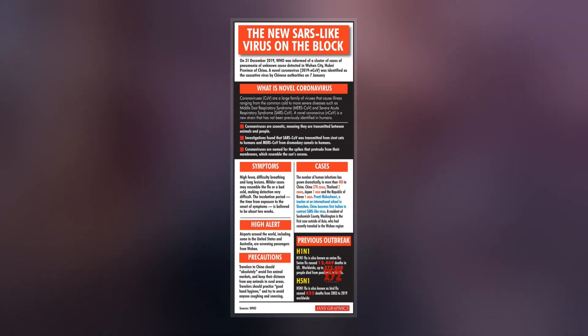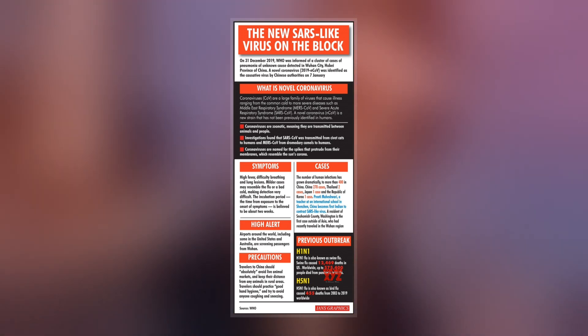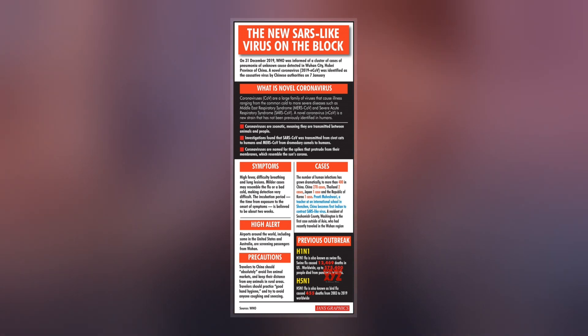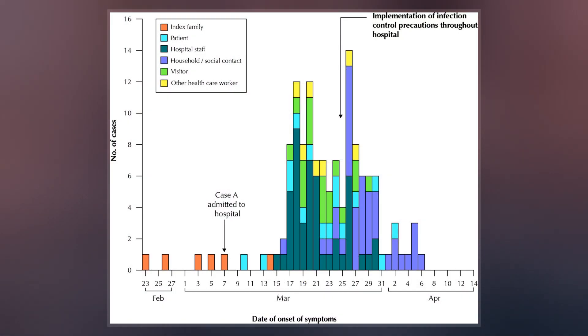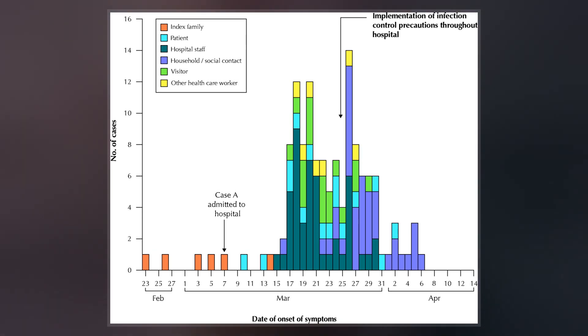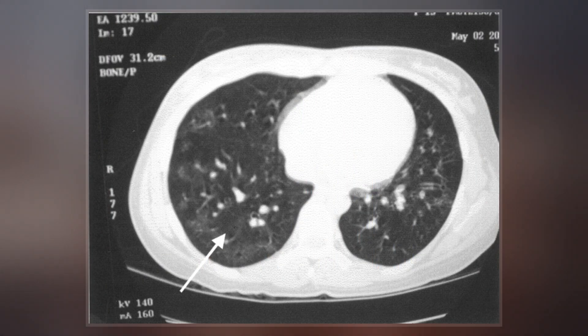The basic reproduction number of SARS-CoV, R0, ranges from 2 to 4 depending on different analyses. Control measures introduced in April 2003 reduced the R0 to 0.4.